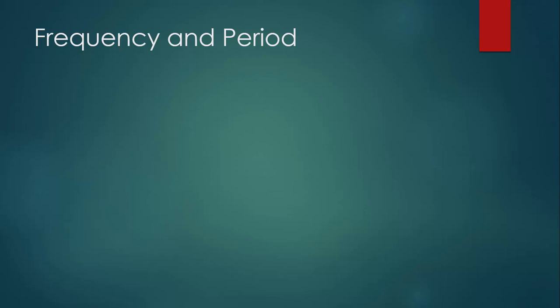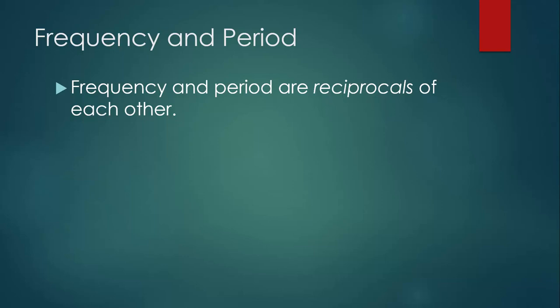Frequency and period have a unique and important relationship. Take a look at the equations you just wrote for them. Do you notice that the equation for period is just the equation for frequency flipped upside down? This is because frequency and period are reciprocals of each other. This means that we can write a very simple equation that relates frequency and period. We can write it either as f equals 1 over T or as T equals 1 over f.